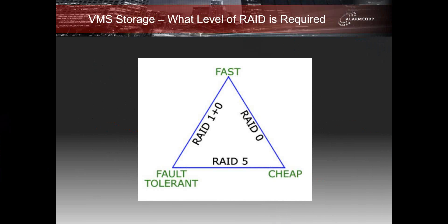Here's a simple diagram of a triangle: fast, cheap, or fault-tolerant. It depends on what the actual client is after. Within an application, you may have a number of different RAID sets actually combined as one solution. We're going to discuss where we combine two types of RAID in a VMS server — that'll be RAID 1 and RAID 5.